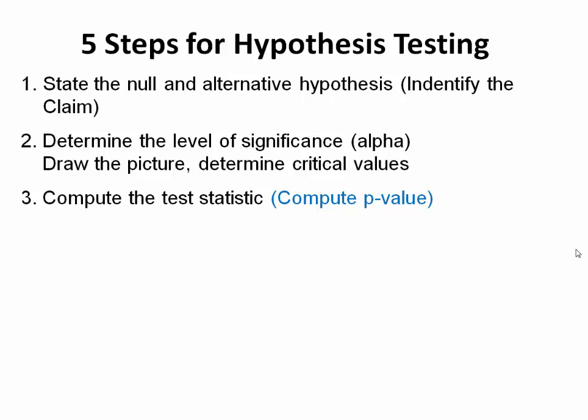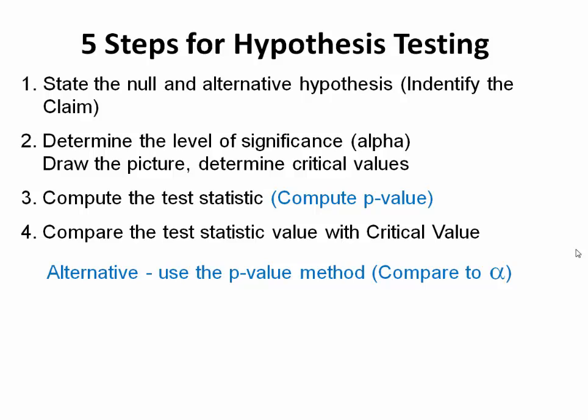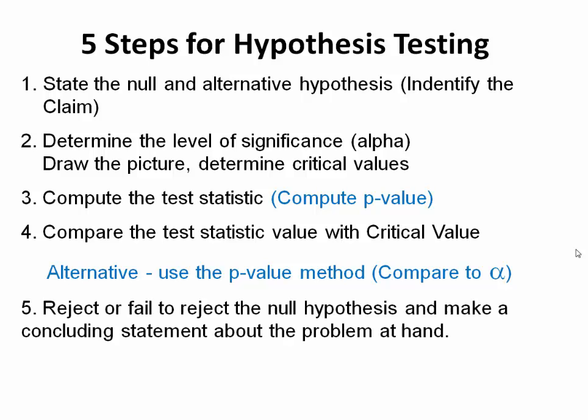After we compute the test statistic, we compute the p-value. In step four, we're going to compare the test statistic with the critical value, or as an alternative method, we're going to use the p-value method to compare the p-value to alpha. In step five, we're going to reject or fail to reject the null hypothesis and make a concluding statement about the problem at hand and support or deny any claim that we make.